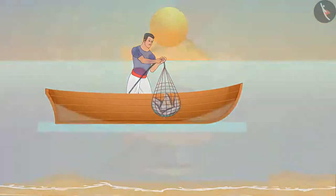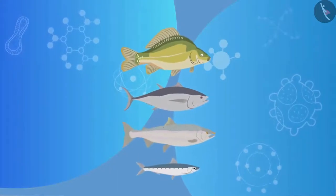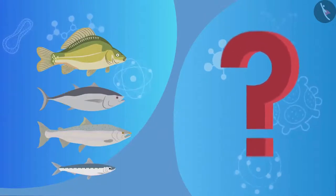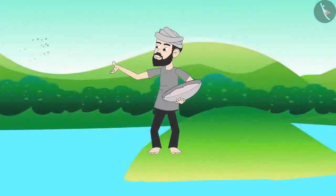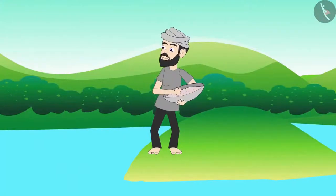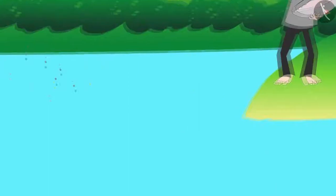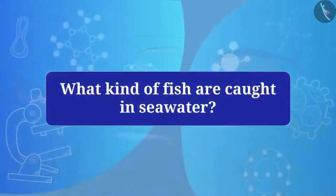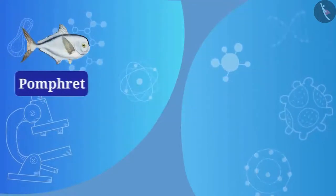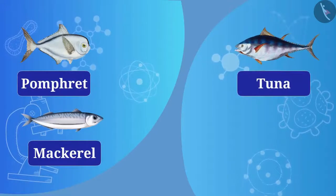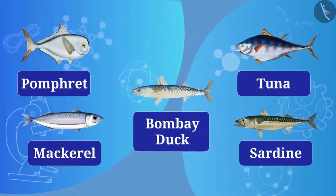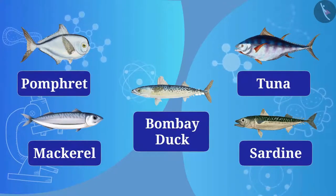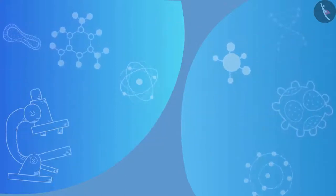To increase fish production, fish culture is practiced. In this method, selected different kinds of fishes are grown with care in limited areas of a lake or sea. Fish like pomfret, mackerel, tuna, sardine, and Bombay duck are caught in the sea. Marine fish of high economic value, such as mullet, are also cultivated in sea water, as well as seaweed.